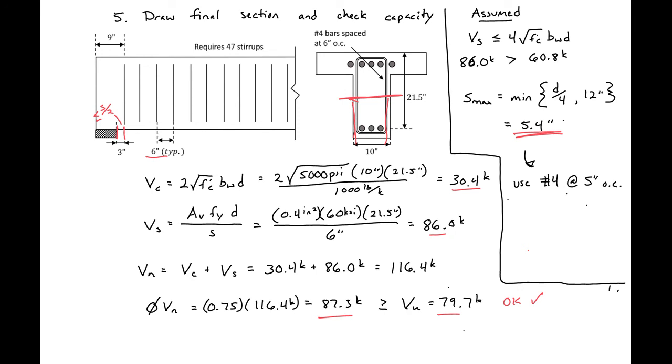So number 4 bars at 5 inches on center is what we're going to use for our final design. And since we have a closer spacing, we know that our φV_n is still going to be okay.